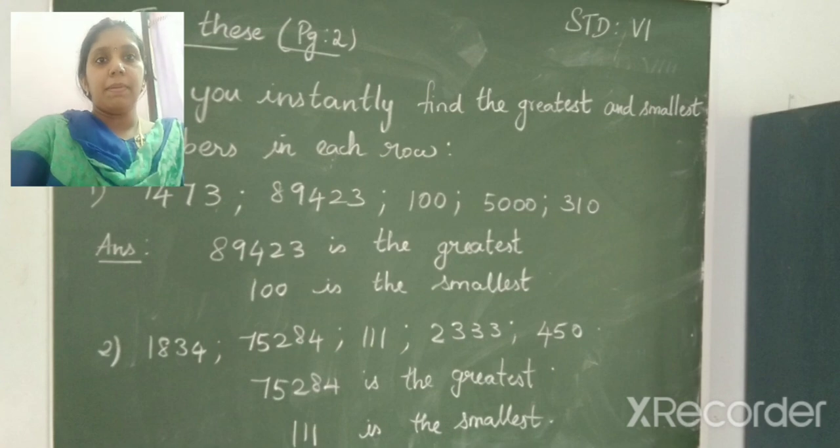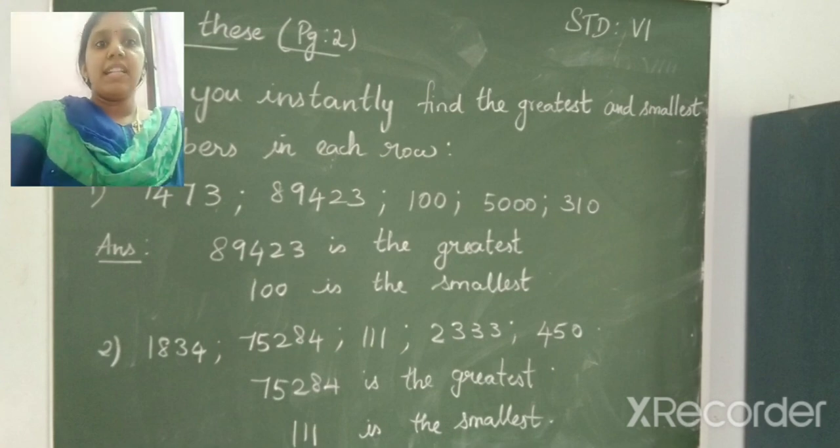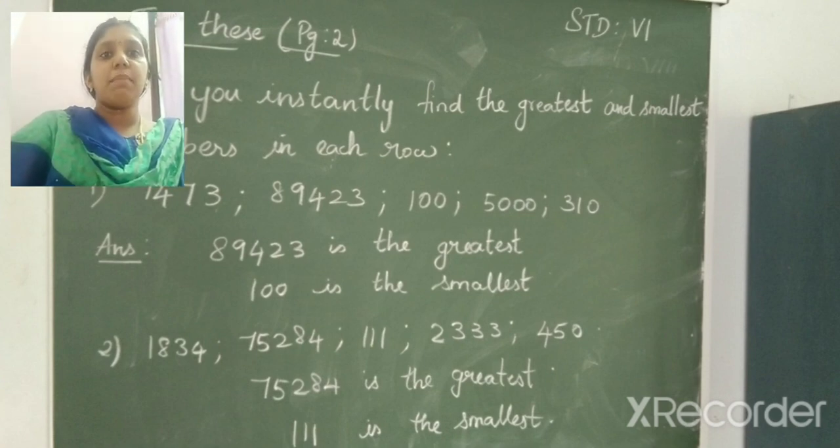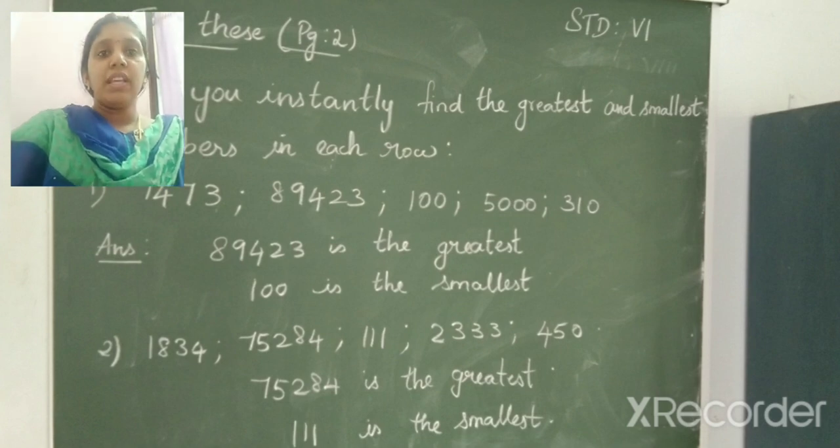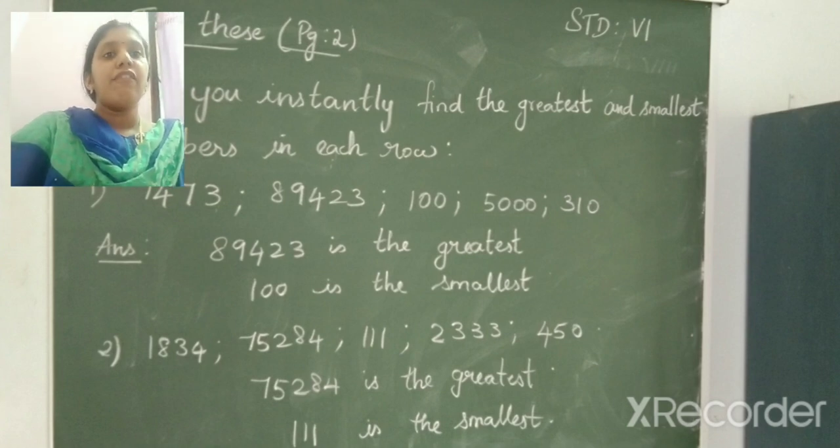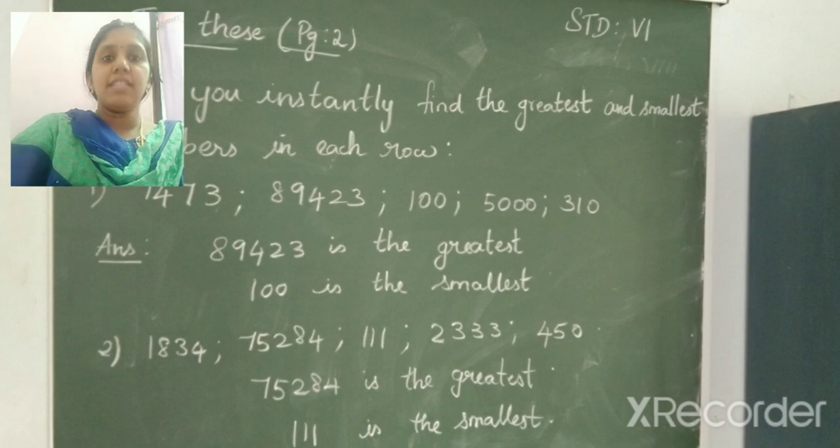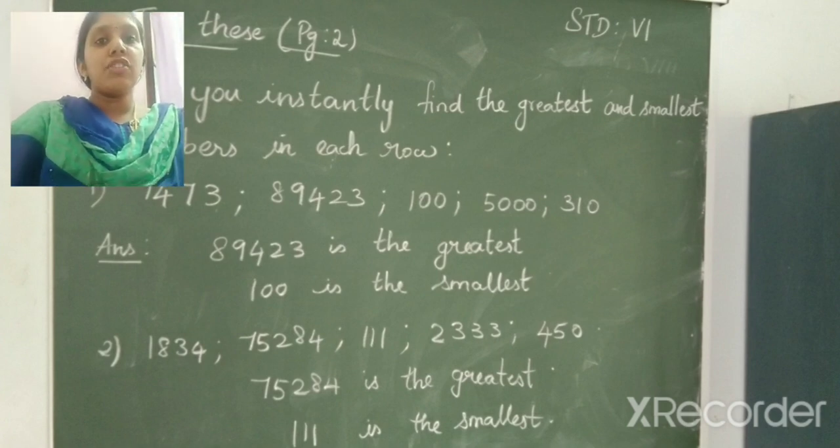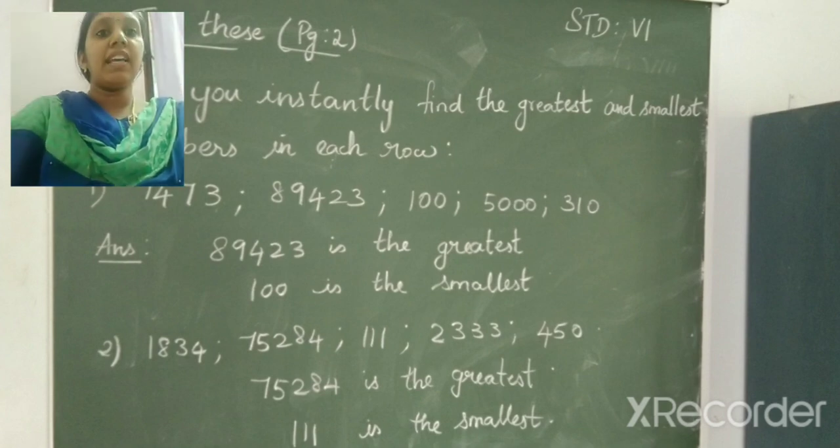Coming to the example. Can you instantly find the greatest and smallest numbers in each row? So here the question is 1,473, 89,423, 100, 5,310. So here 3 digit number, 4 digit number and 5 digit numbers are given.